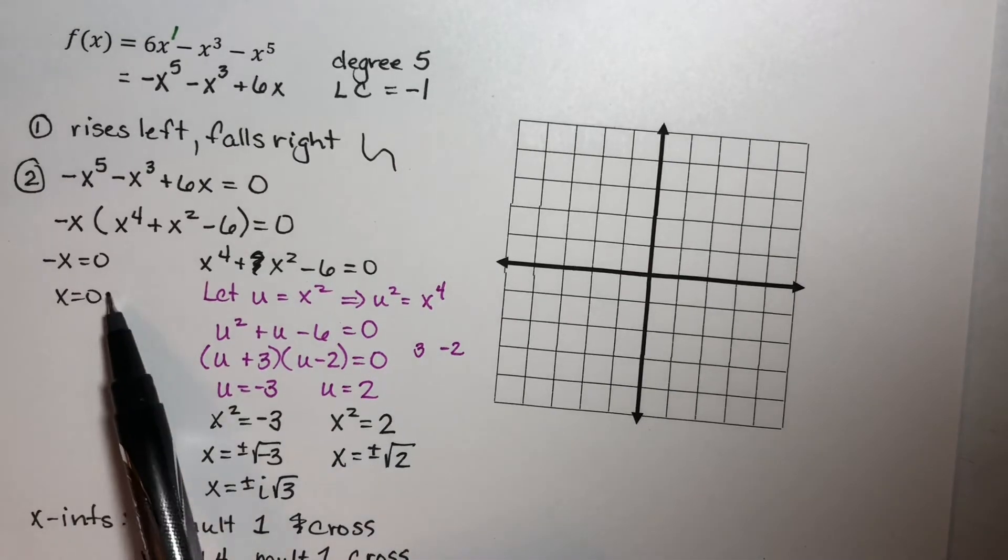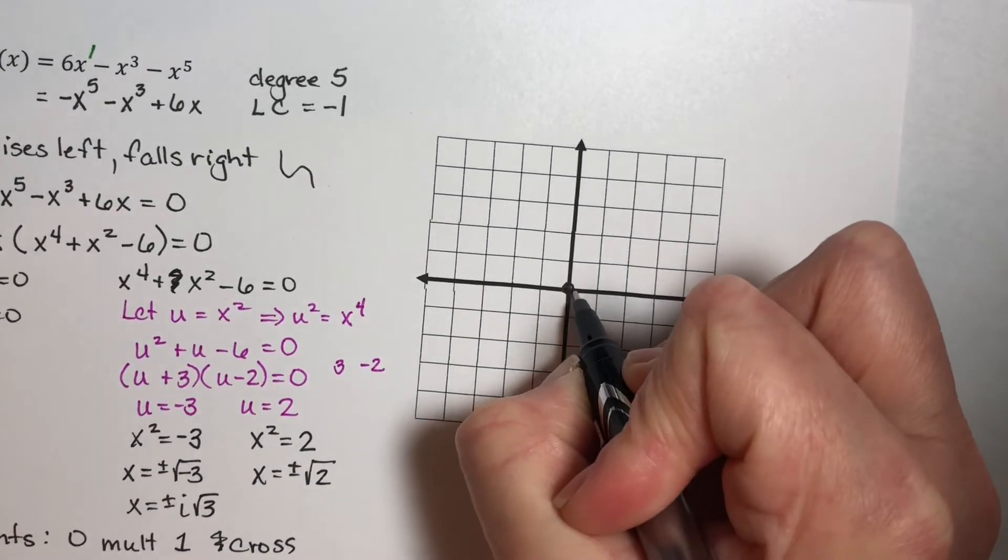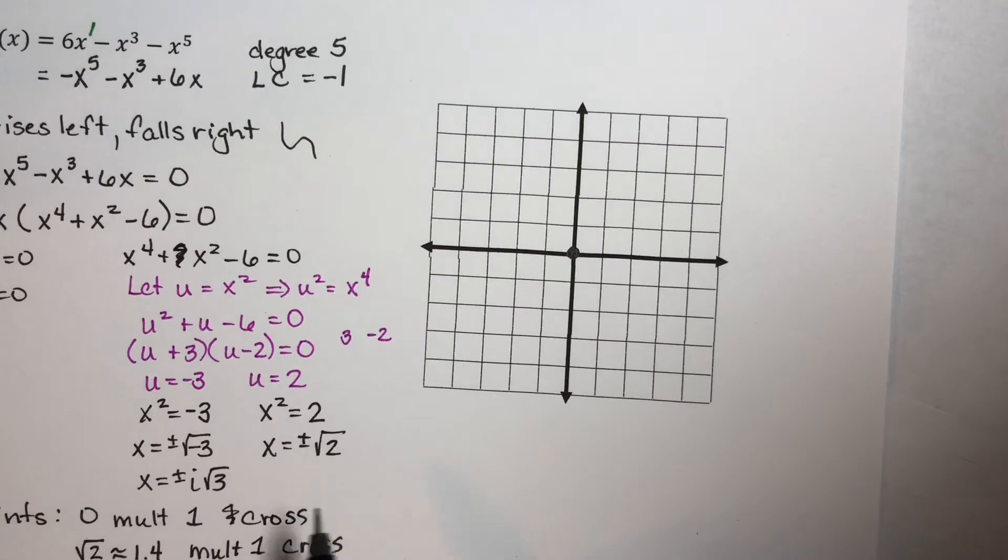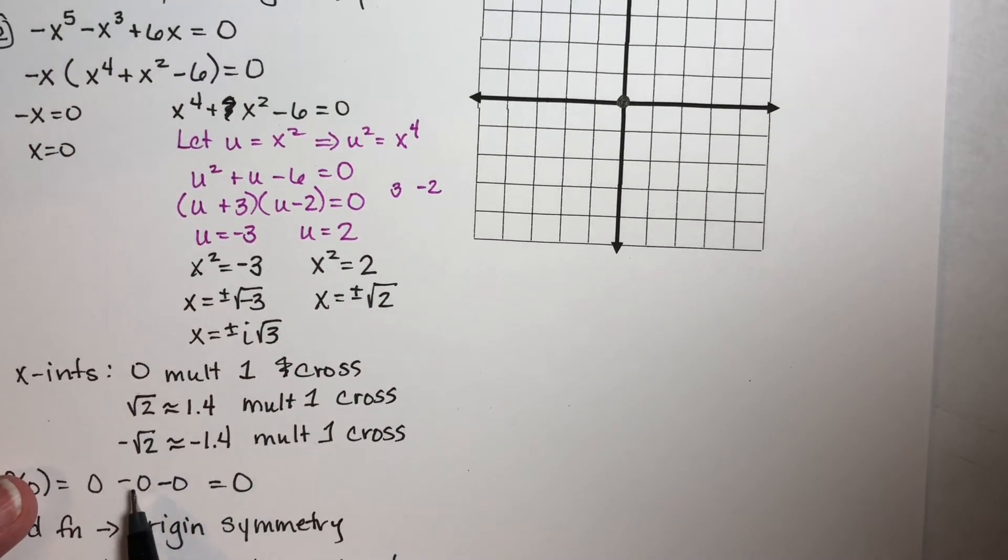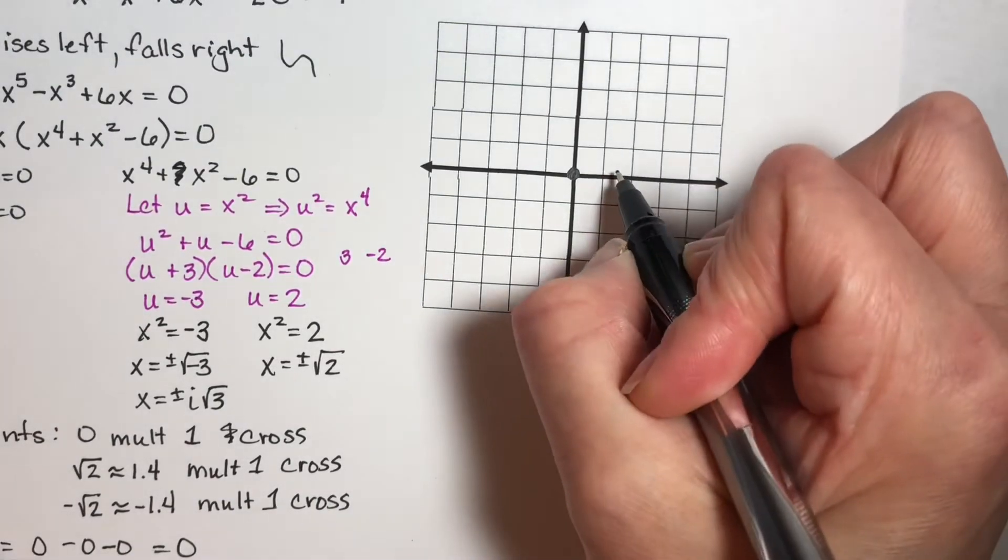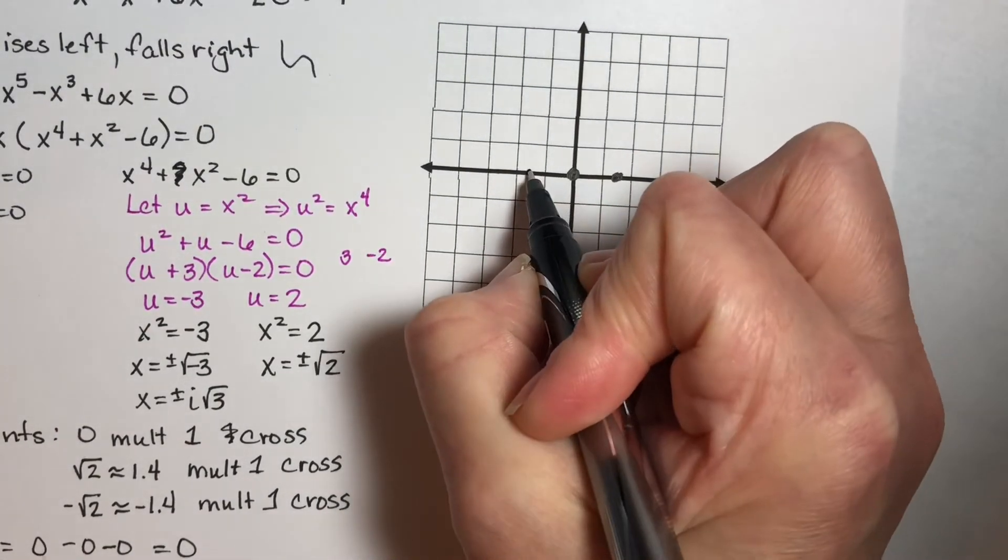My x-intercepts, I have one at zero. And I have one at the square root of two and one at the negative square root of two. So that's about 1.4 and negative 1.4.